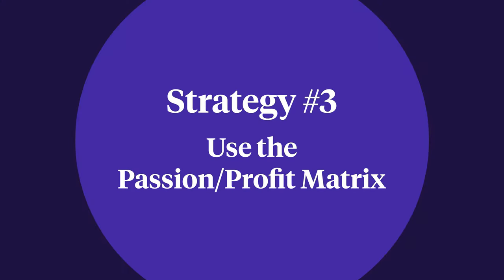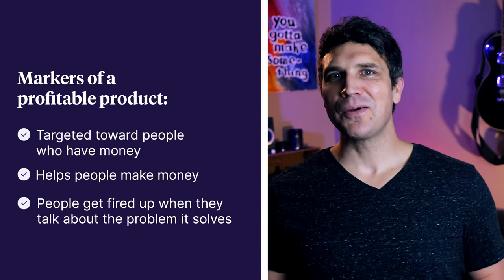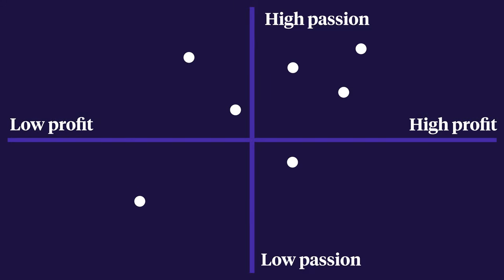Use the Passion Profit Matrix — a tool to categorize your product ideas to find something with high earning potential that you'll also enjoy creating. You want to choose something that makes money but won't cause you to burn out six months down the road. Take your list and score each idea on how profitable it is and how passionate you are about it. Markers of a profitable product include: it's targeted toward people who have money, it helps people make money, and people get fired up when they talk about the problem it solves. Plug them into the matrix with low to high profit left to right, and low to high passion bottom to top — the ones in or closest to the upper right are your best bets.